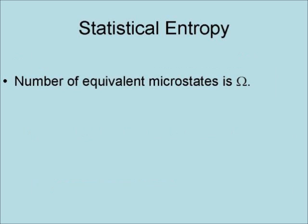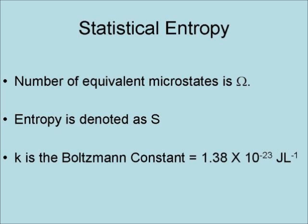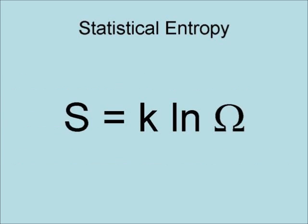The number of equivalent microstates, or the number of possible ways for a given condition to occur, is noted as omega. In this formula, entropy is denoted as S, and K is the Boltzmann constant. This results in the formula S equals K times the natural logarithm of omega.